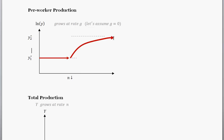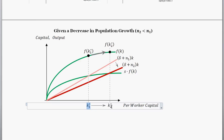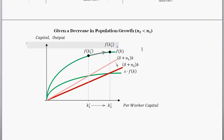So per worker production is jumping up to a new higher level and approaching the new steady state. Total production is either not growing as fast or not growing at all. To summarize: delta plus n shifts down to a new lower level; per worker capital increases to the new K-star; per worker production increases to the new higher level. Check out the video description for useful links. Thanks and have a good day.